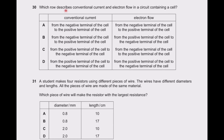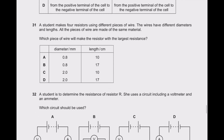Question 30: what is the direction of conventional current and electron flow in a circuit containing a cell? Conventional current flows from the positive terminal to the negative terminal. Electrons flow from the negative terminal. So option C is the right answer.